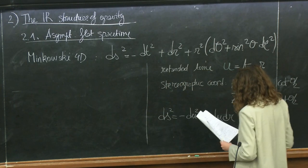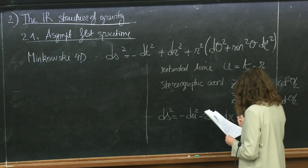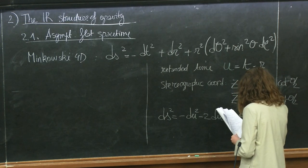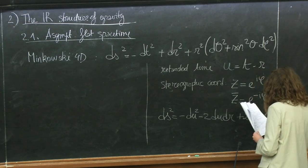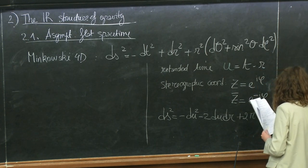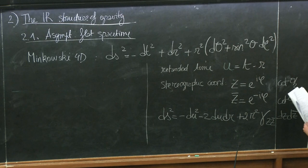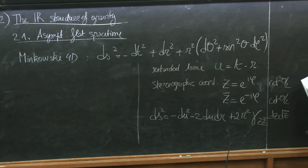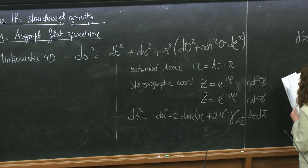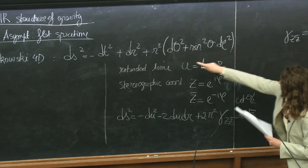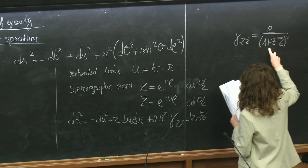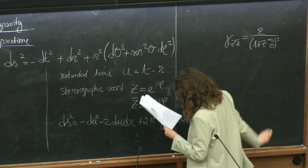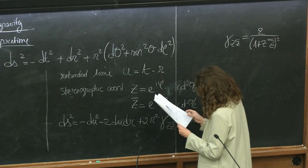In these coordinates the Minkowski line element takes the form: ds² = −dU² − 2 dU dR + 2R² γ_{ZZ̄} dZ dZ̄, where γ_{ZZ̄} = 2/(1 + ZZ̄)² is just the unit sphere metric written in complex coordinates.